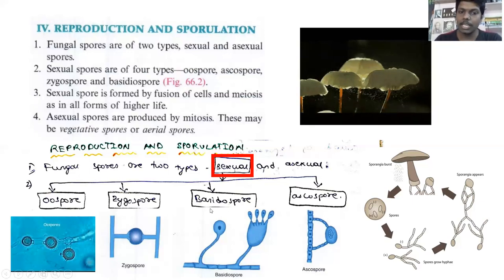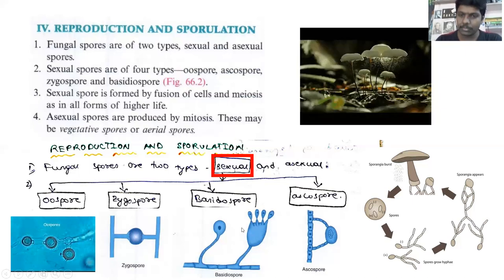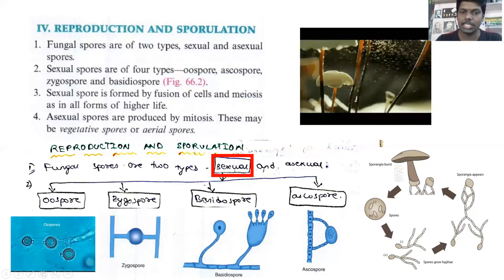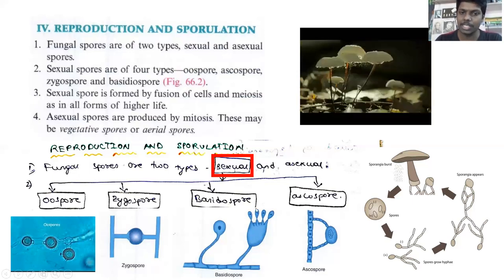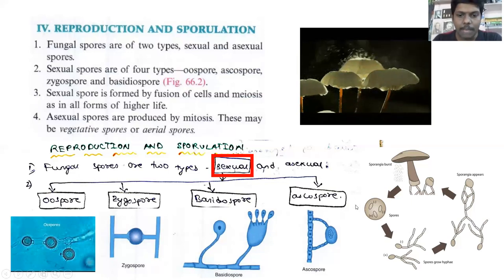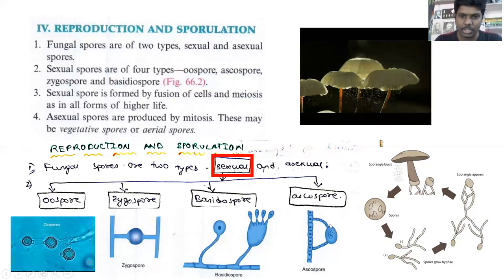In Basidiospores, we will have female and male stems on the same hyphae. From the same hyphae we will get a male sporangium and female sporangium, and the spores from the male will land on the female sporangium. They form a bell-like or umbrella-like structure. In Ascospores, two branching filaments arise from the same hyphae and fuse together to form a spore. These four types are the sexual spores present in fungi.